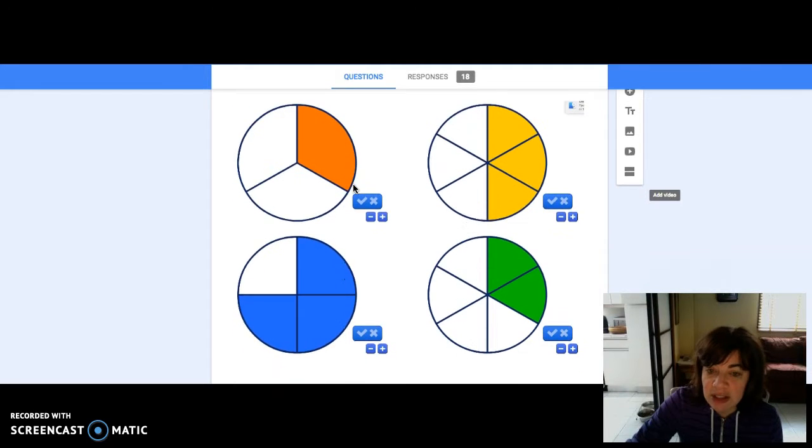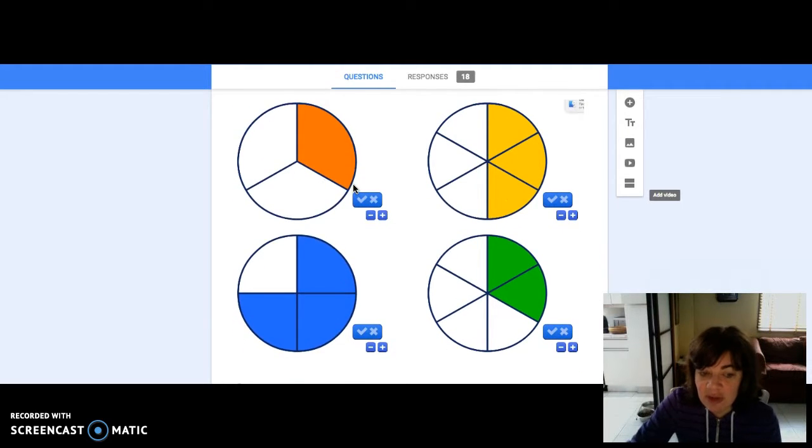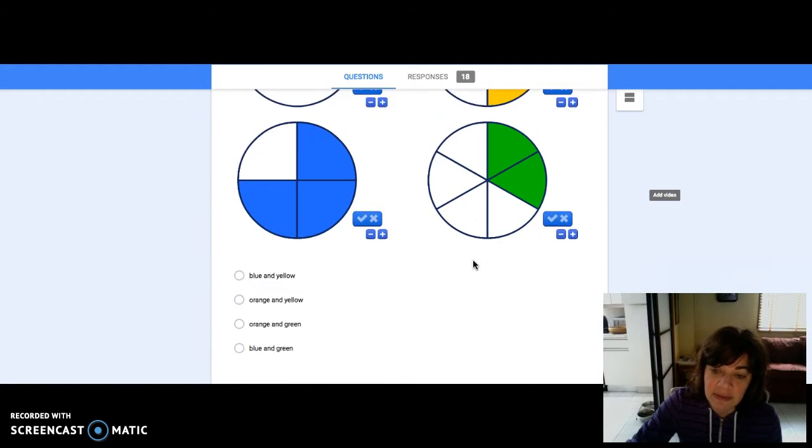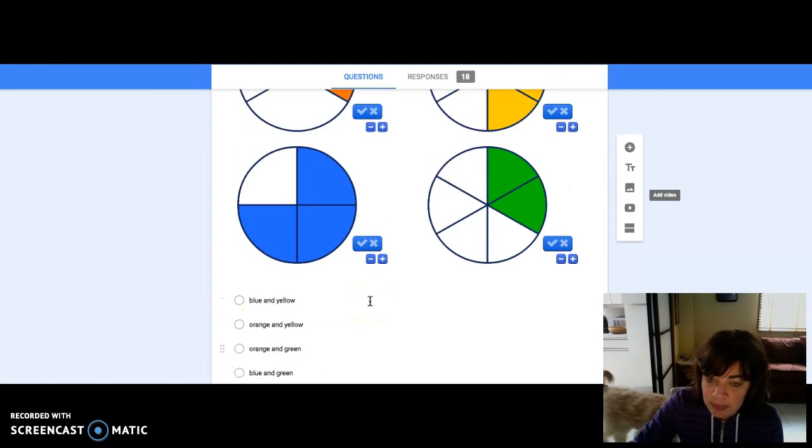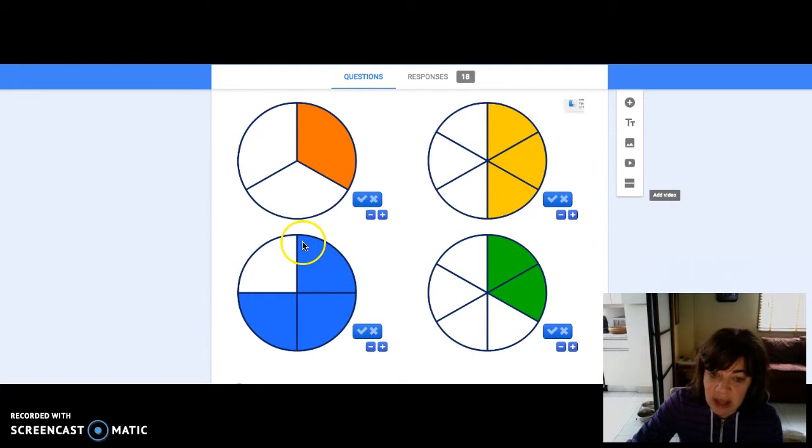Well, we know that equivalent fractions cover the same amount of space. So if we look at these, we see that the orange and the green, even though the circle is divided into a different number of spaces, the shaded part still covers the same space. Therefore, orange and green was the correct answer. The blue space covers a lot more than the orange and the green.